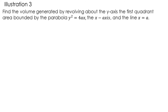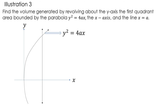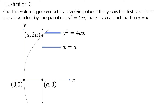Let us solve the volume generated by revolving about the y-axis the first quadrant area bounded by the parabola y² = 4ax, the x-axis, and the line x = a. If the parabola y² = 4ax intersects with the line x = a, the first quadrant area formed is bounded by the parabola, the line, and the x-axis. The points of intersection will be at (0,0), (a, 0), and at (a, 2a).